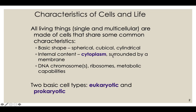Every cell on the planet is surrounded by a cell membrane made up of a phospholipid bilayer. Every single cell also has at least one chromosome — either a prokaryotic circular chromosome or the true linear chromosomes found in eukaryotic cells. For prokaryotes, they function the same and are made of the same material, but they don't divide by mitosis or meiosis. Cells also have ribosomes and the ability to generate ATP — energy — inside the cell.